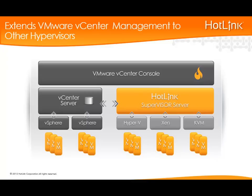For enterprises that are already using VMware vSphere and vCenter, they can utilize the Hotlink Supervisor virtual appliance to connect their vCenter server to other hypervisors, including Microsoft Hyper-V, Citrix XenServer, and KVM. Once connected, the hosts and virtual machines from the other hypervisors will be treated just like VMware vSphere hosts and virtual machines, and will be managed in the same VMware vSphere client and with VMware vCenter server.